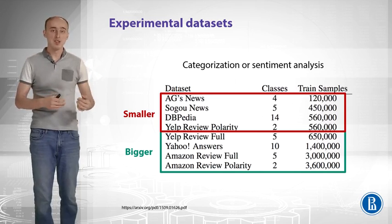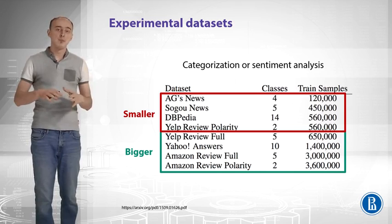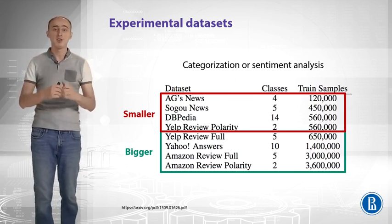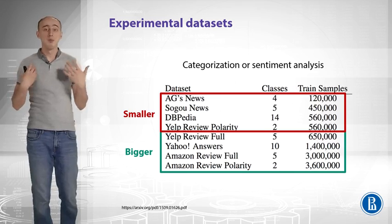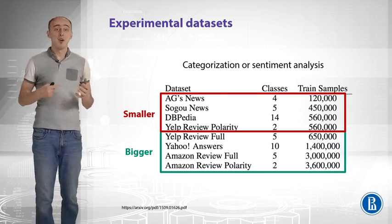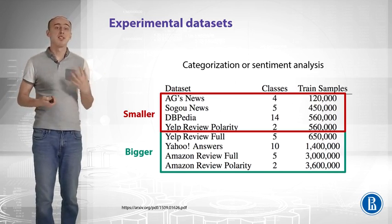We have two categories of these datasets. The first one, the red one, are smaller datasets. And they contain, at most, 600,000 training samples. And we have bigger datasets that contain millions of samples. Let's compare our models on these two types of datasets.